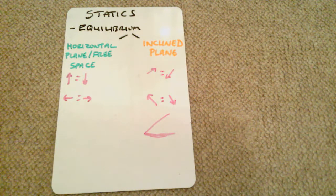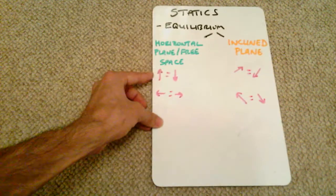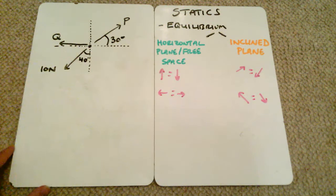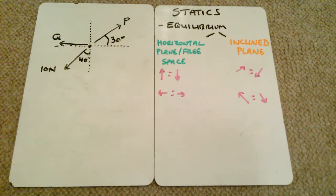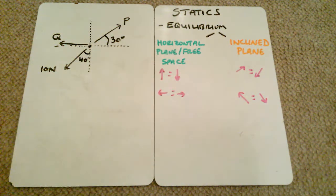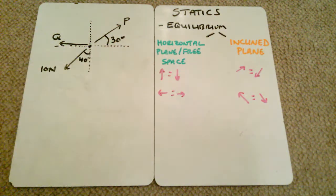We'll start with a particle in free space. What we have is a particle in the middle with three forces acting on it: P acting at an angle of 30 degrees above the horizontal to the right, Q to the left, and 10 newtons acting downward and to the left at an angle of 40 degrees to the vertical. Since this is a horizontal or free-space question, we look at forces up and down and left and right. Q is already acting left, so we don't need to resolve it.